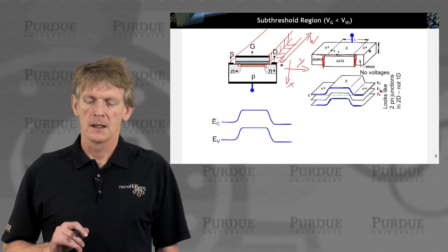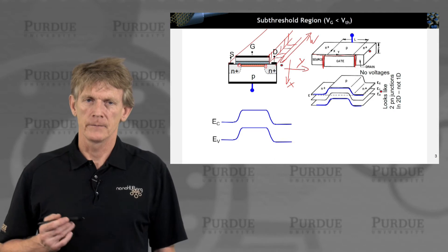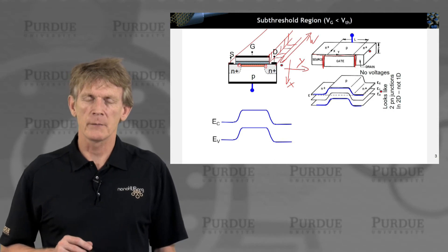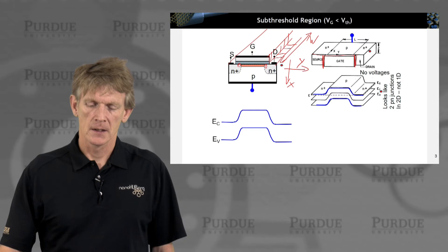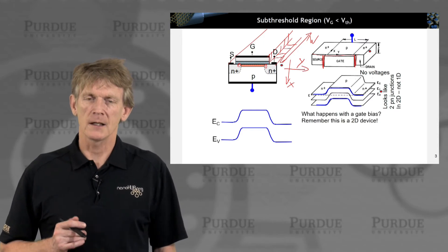So you have a conduction and valence band that are distributed like this, source and drain. And now you can ask yourself,